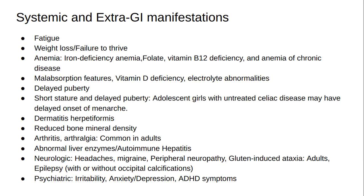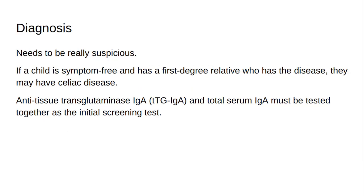Neurologic manifestations include headaches, migraine, peripheral neuropathy, gluten-induced ataxia, and epilepsy with or without occipital calcifications, primarily in adults. Psychiatric manifestations include irritability, anxiety, depression, and ADHD symptoms.